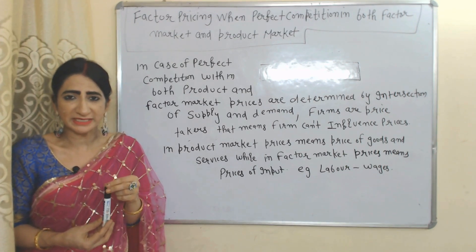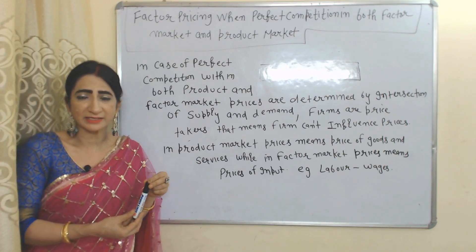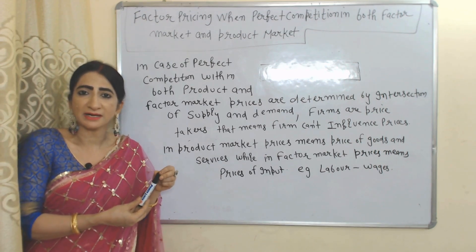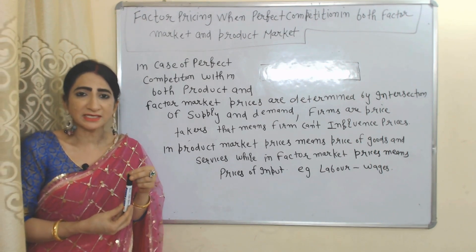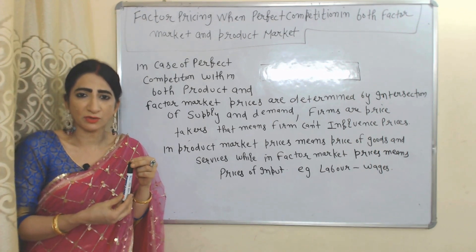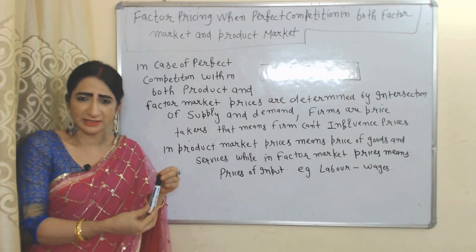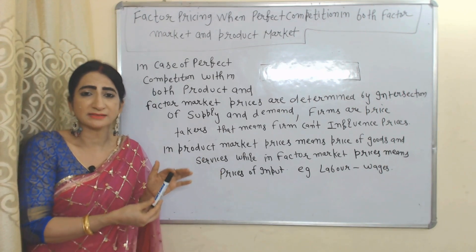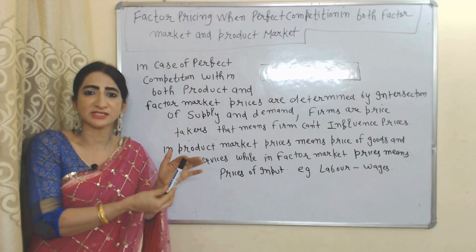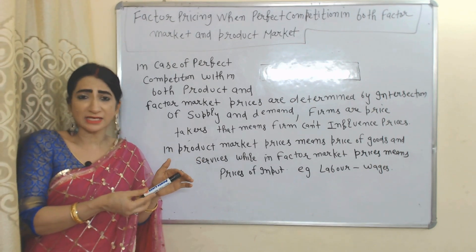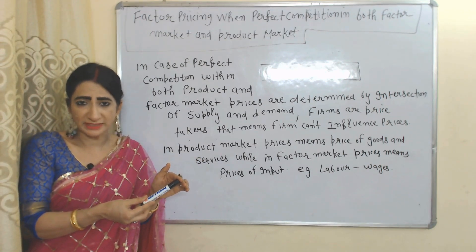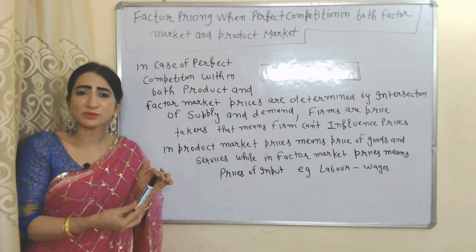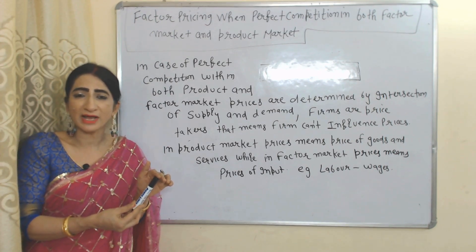In case of perfect competition in both markets, prices are determined by the intersection of demand and supply. As we know, in case of perfect competition, firms are price takers. That's why firms cannot influence prices in both markets.